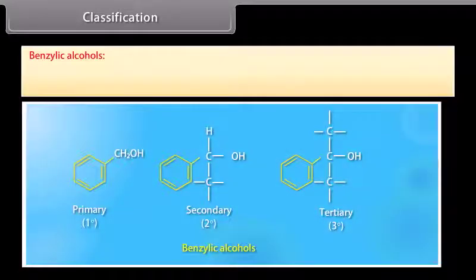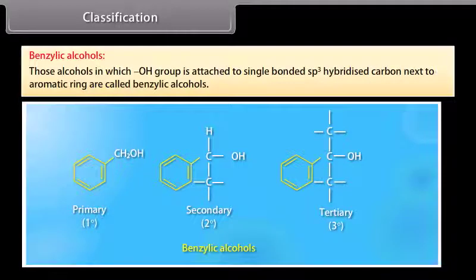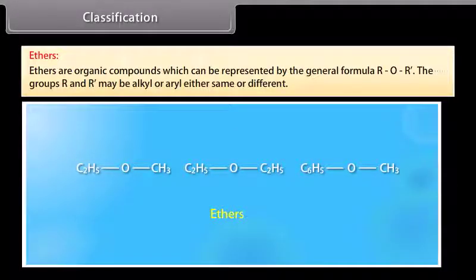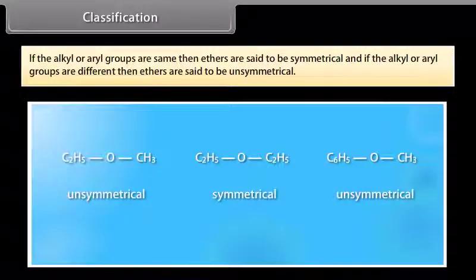Benzylic alcohols are those in which the hydroxyl group is attached to a single-bonded sp3 hybridized carbon next to an aromatic ring. Compounds containing sp2 hybridized carbon atom bonded with a hydroxyl group — the hydroxyl group is attached to a carbon-carbon double bond. Ethers are organic compounds represented by the general formula ROR'. The groups R and R' may be alkyl or aryl, either same or different. If the same, ethers are symmetrical; if different, they are unsymmetrical.